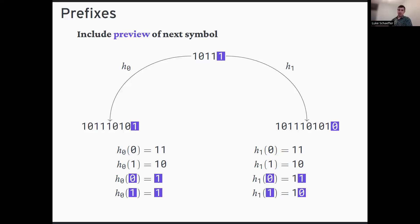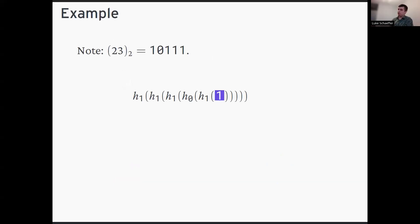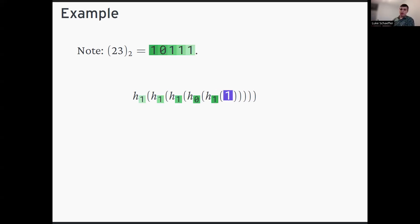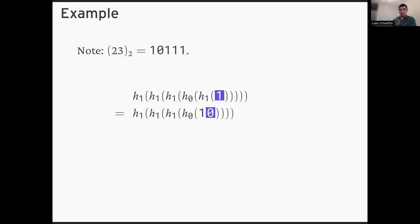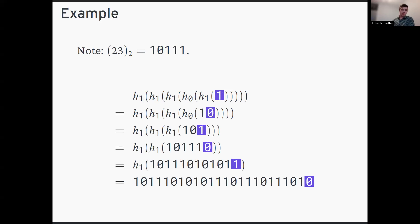This construction can be carried out for any k-automatic sequence. If we want to compute the prefix of length 23, it suffices to work out the binary representation of 23 — digits 1,0,1,1,1 — and apply those morphisms to the empty prefix. This builds up exactly the prefix of length 23 plus a preview of the next symbol, giving a clean morphic way to represent prefixes in the period-doubling sequence that generalizes to any k-automatic sequence.